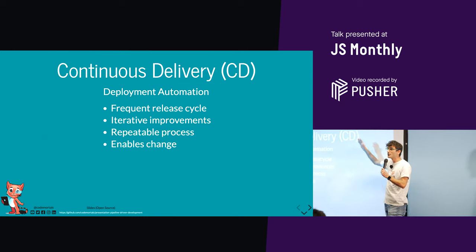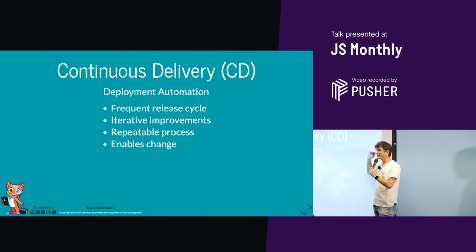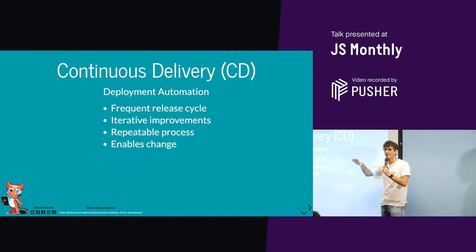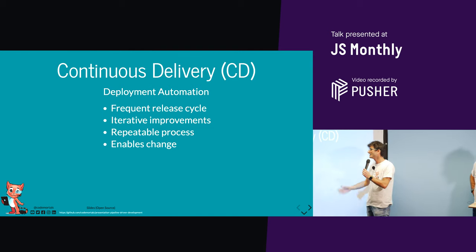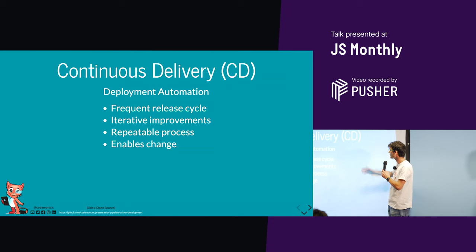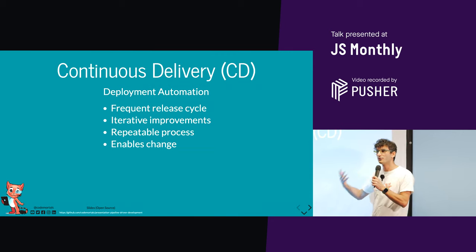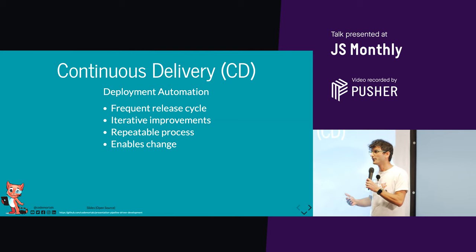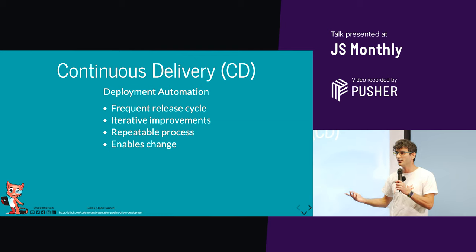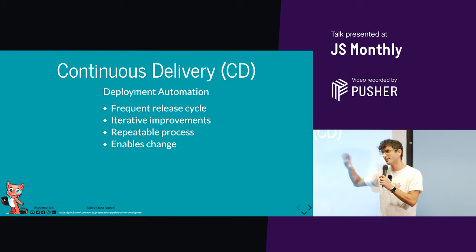Who here uses CI? Who here does CD — continuous delivery? Who deploys on their CI? Even if you don't go all the way to production, it's still really good to at least go one environment before. On whatever CI platform you're using, you can add an extra step: if it's a certain branch, you can then deploy out. If you're on a feature branch, you probably don't want that to deploy — although for some clients we do deploy to a whole production-like environment.